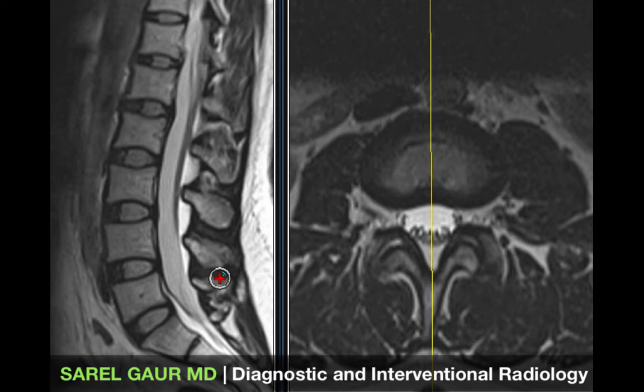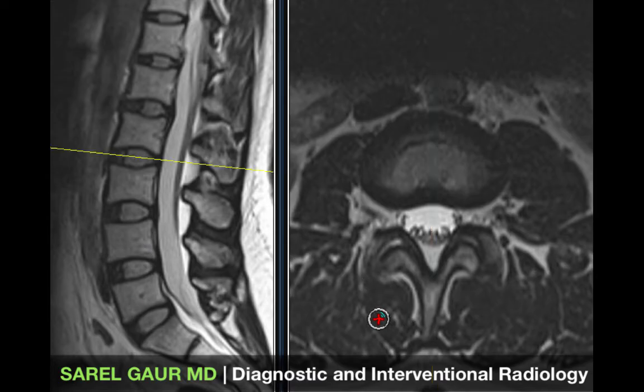Let's go ahead and talk about the lumbar spine MRI anatomy and what you need to know in order to interpret this set of images. I basically have a sagittal set of images here on the left and an axial set of images on the right, and these are both T2 weighted without fat suppression.